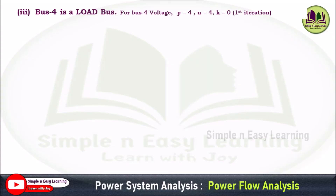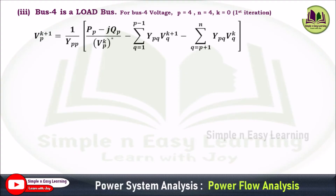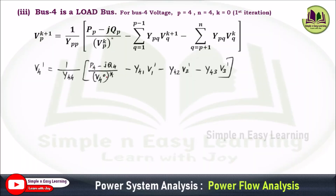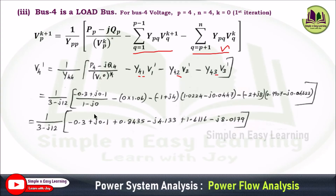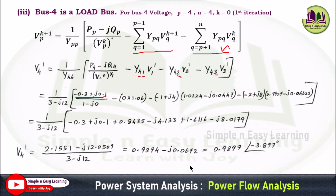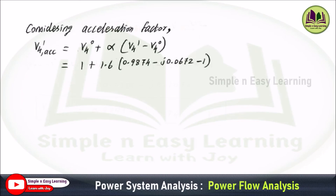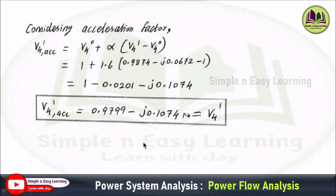Similarly, for bus 4, which is also a load bus: P=4, n=4, k=0. In the first summation, Q varies from 1 to P−1=3, giving three terms (Q=1, 2, 3). In the second summation, Q would start at P+1=5, which exceeds n=4, so no terms apply. Substitute all power values as negatives, simplify, and obtain the final answer in polar and rectangular form. Then apply the acceleration factor for bus 4. This is how you solve power flow analysis using the Gauss-Seidel method.